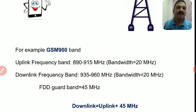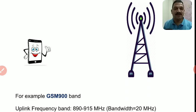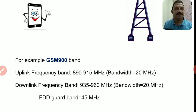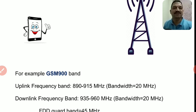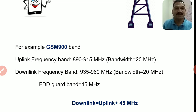इस frequency का use करके हम हमारे mobile phone से Base Station के बीच में हमारे signal को या voice को transmit कर सकते हैं। Downlink frequency इस band में जो provide की गई थी वो है 935 MHz to 960 MHz, again bandwidth 20 MHz। Means 935 to 960 MHz का use करके हम Base Station से mobile phone के बीच में signal को transmit कर सकते हैं। इस तरह से duplexing होती है।